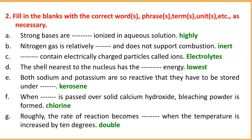Number B: Nitrogen gas is relatively inert and does not support combustion. The answer is INERT. Number C: Electrolytes contain electrically charged particles called ions.